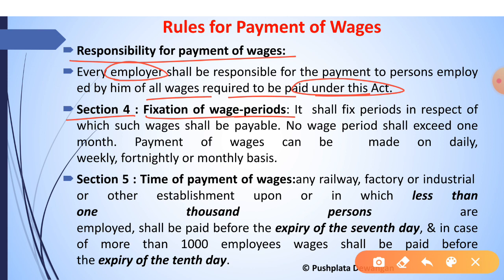Section 4 provides for the fixation of the wage period. The wage period in respect of which wages shall be payable shall be fixed, and no wage period shall exceed one month. Payment of wages can be made on a daily, weekly, fortnightly, or monthly basis.